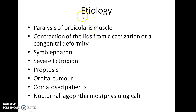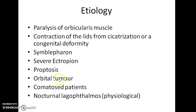Now, let us see about the etiology of lagophthalmos. Paralysis of orbicularis muscle, contraction of the lids from scarization or congenital deformity, symblepharon, severe ectropion, proptosis, and orbital tumor are the various causes for lagophthalmos.